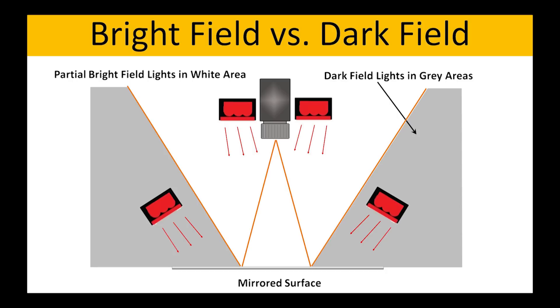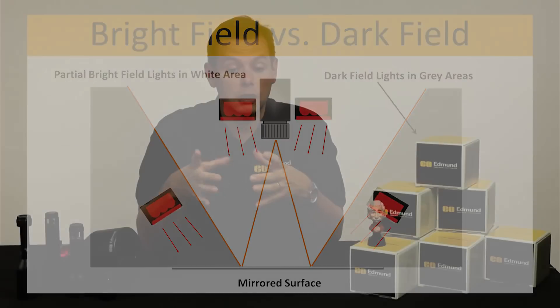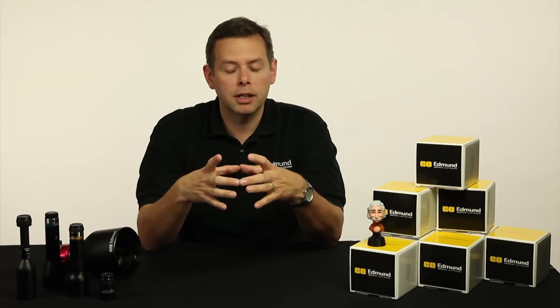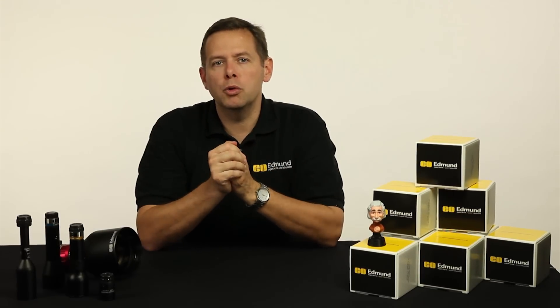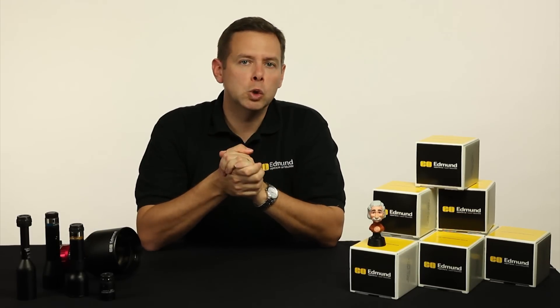As we slide past that angle, the light is going away from the lens and is no longer seen. Instead of seeing that bright specular object or the bright light coming off of that object, we're actually seeing nothing. It's dark, and this is where we move into dark field illumination.